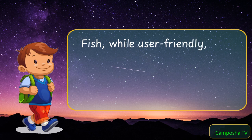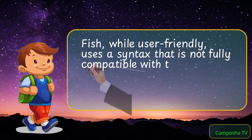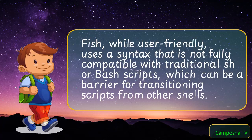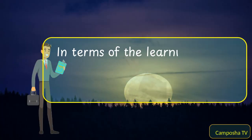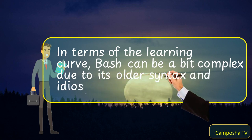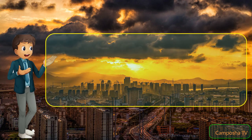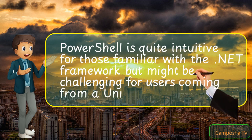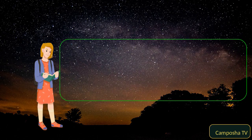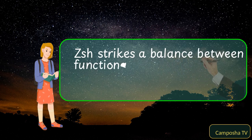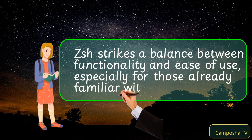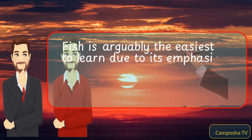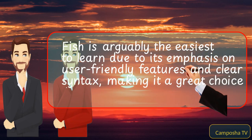Fish, while user-friendly, uses a syntax that is not fully compatible with traditional SH or Bash scripts, which can be a barrier for transitioning scripts from other shells. In terms of the learning curve, Bash can be a bit complex due to its older syntax and idiosyncrasies. PowerShell is quite intuitive for those familiar with the .NET framework, but might be challenging for users coming from a Unix-like environment. ZSH strikes a balance between functionality and ease of use, especially for those already familiar with Bash. Fish is arguably the easiest to learn due to its emphasis on user-friendly features and clear syntax, making it a great choice for beginners.